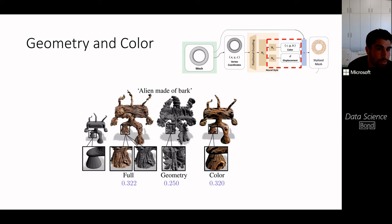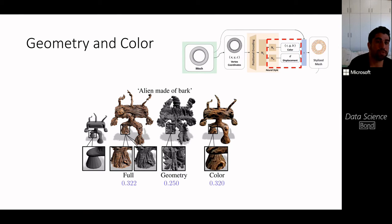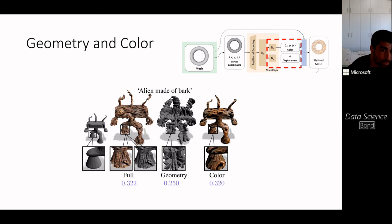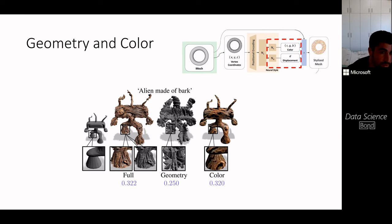Here is an example of an alien made of bark. When we predict both color and displacement, the result looks most realistic. When we train only the color component or only the geometry component, the results look less realistic. In fact, when producing just the color component, the network tries to hallucinate geometric details.